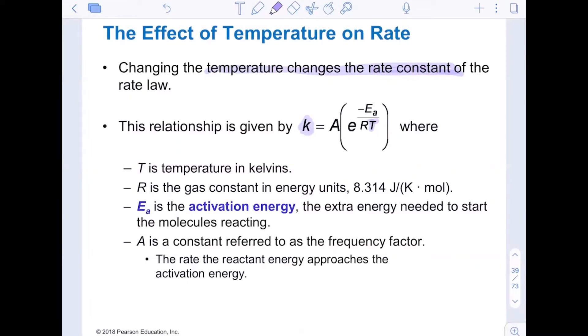T has to be in Kelvins. R is the gas constant, but with energy units. Now, typically we had seen R is equal to 0.0821 in ATM liters over moles Kelvin. So what we've done is effectively multiplied it by 101.3 joules per ATM liter, so that we get an R that we will use for this equation as 8.314 joules per mole Kelvin.